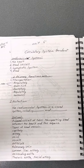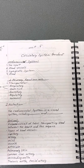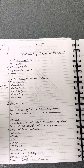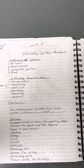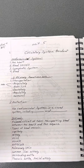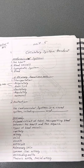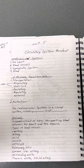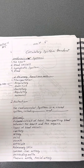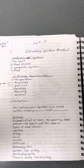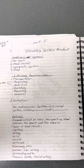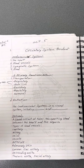This is the circulatory system, lecture number five. I'll go over the cardiovascular system. Parts of the cardiovascular system are the heart, blood vessels, lymphatic system, and blood. Two primary functions of the cardiovascular system are transportation and protection.